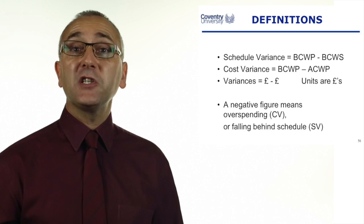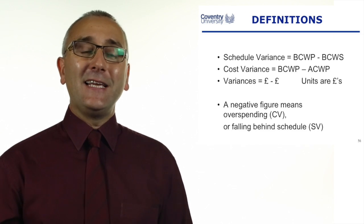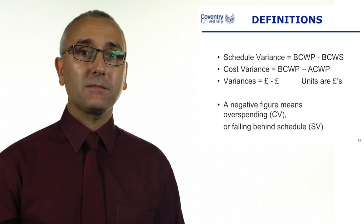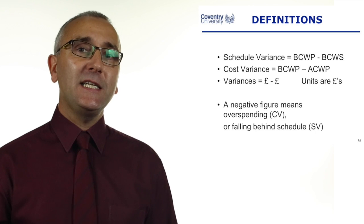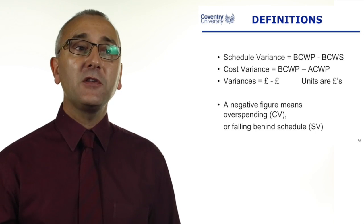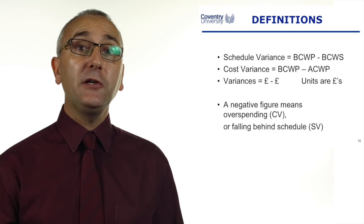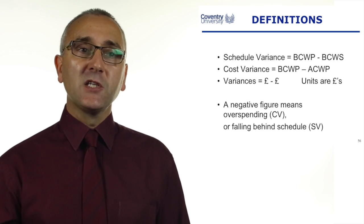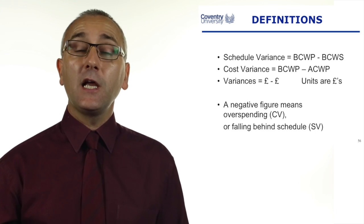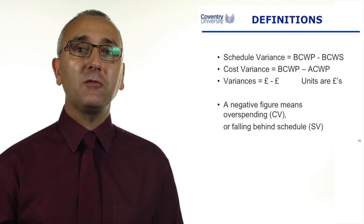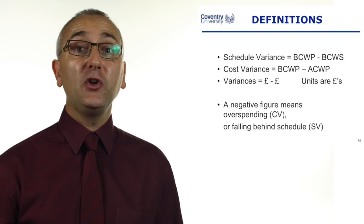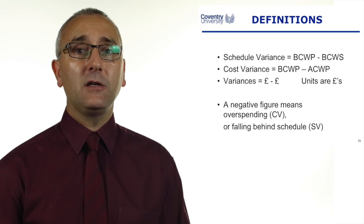Microsoft Project can calculate the schedule variance and the cost variance, and there's also EAC and VAC, which we'll look at in a minute. It's just different terminology — the schedule variance is still BCWP minus BCWS, the earned value minus the budget. An important thing to consider is that cost variance and schedule variance are differences — they're pounds minus pounds, so the units are pounds. A negative pound value for cost variance means we're overspending; a negative value for schedule variance means we're behind schedule.